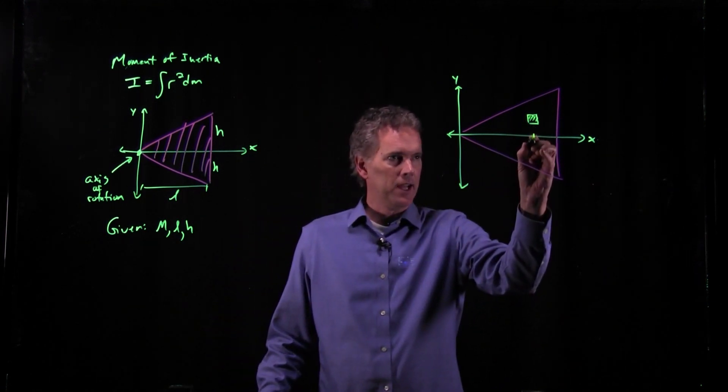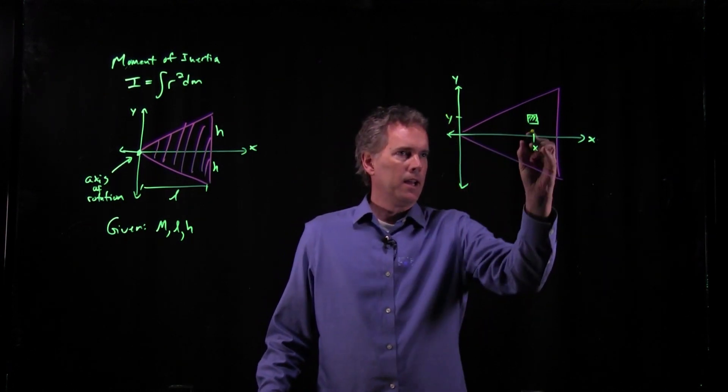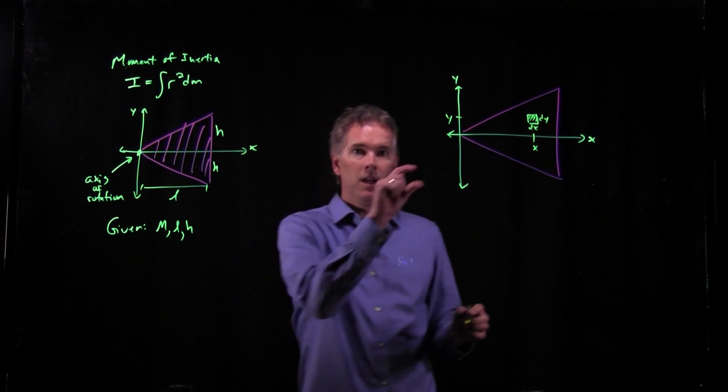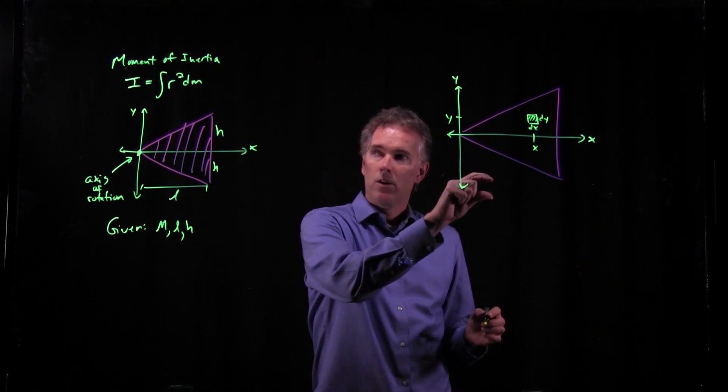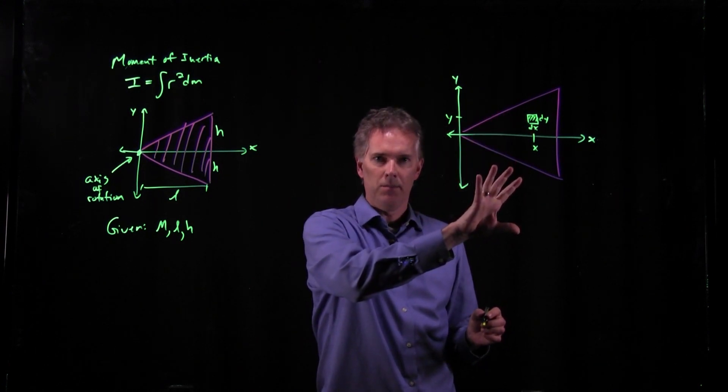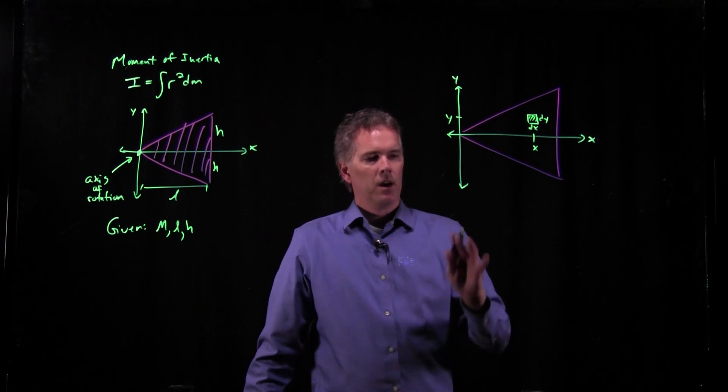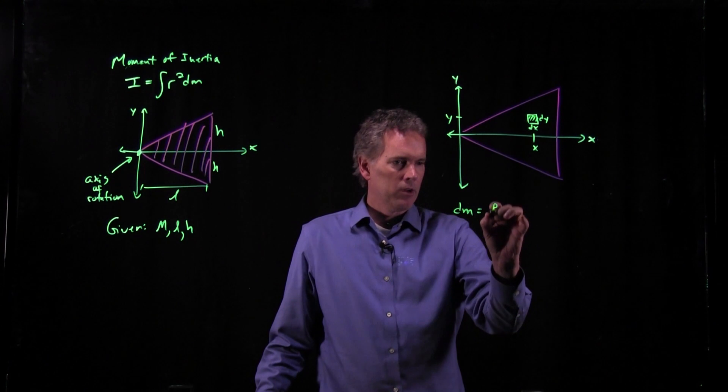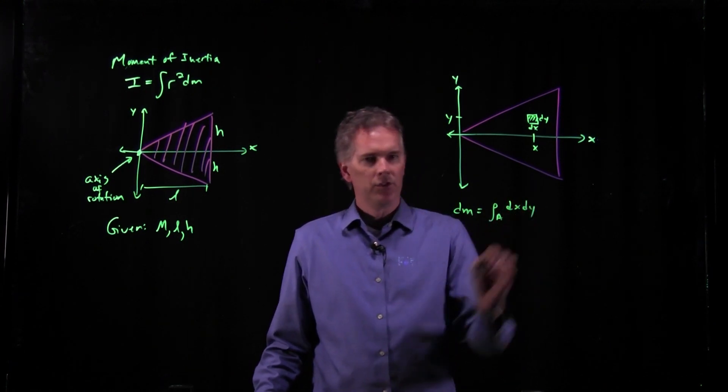So here's our xy coordinate system again. We have our triangular object. And now we need to figure out what dm is. dm is a little bit of mass element. Here's a little dm sitting right there. It is sitting at position x and position y. It has dx on this side, dy on that side.